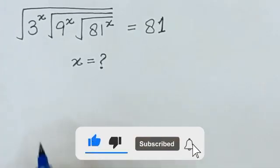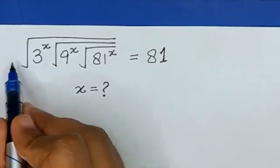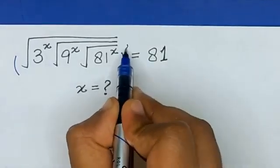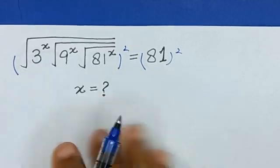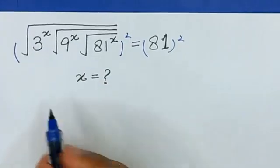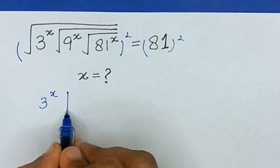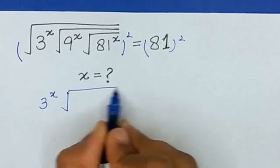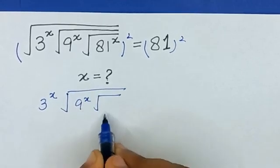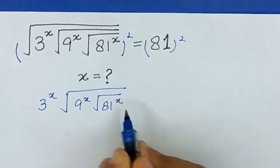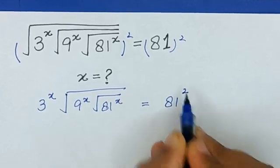First of all, I will take the square on both sides of this equation. So this square and square root will be cancelled out, and it will become 3 raised to the power x times the square root of 9^x, times the square root of 81 raised to the power x, is equal to 81 squared.